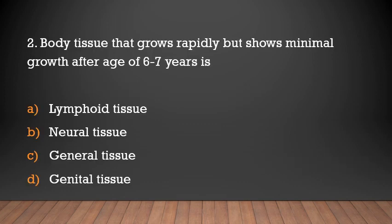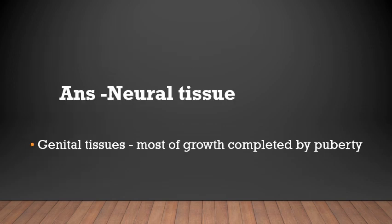Body tissue that grows rapidly but shows minimal growth after the age of 6 to 7 years is: lymphoid tissue, neural tissue, general tissue, genital tissue. Answer: Neural tissue. Neural tissue grows rapidly but shows minimal growth after the age of 6 to 7 years.